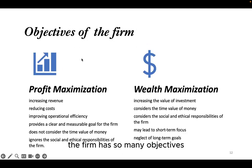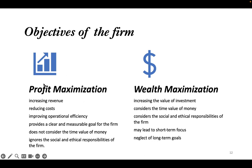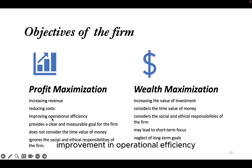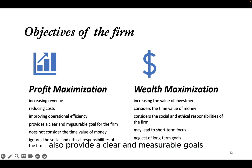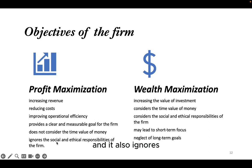The firm has many objectives, but the three major ones are profit maximization, wealth maximization, and growth. Profit maximization is achieved through increase in revenue, reduction in cost, and improvement in operational efficiency. It provides a clear and measurable goal for the firm, but does not consider the time value of money and also ignores the social and ethical responsibility of the firm.